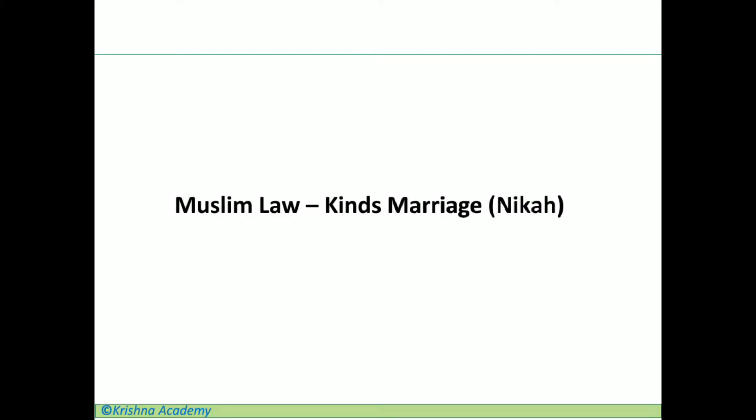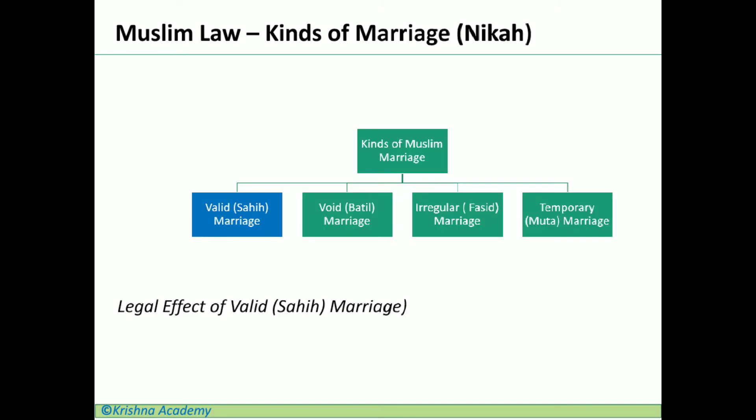Welcome to our channel on Muslim law. Today our topic is kinds of Muslim marriage or kinds of nikah. There are nearly four types of nikah in Muslim law. The first one is valid marriage, also called sahih nikah. The second one is void marriage or batil nikah. Third is irregular marriage or fasid nikah, and fourth is temporary marriage or muta nikah.